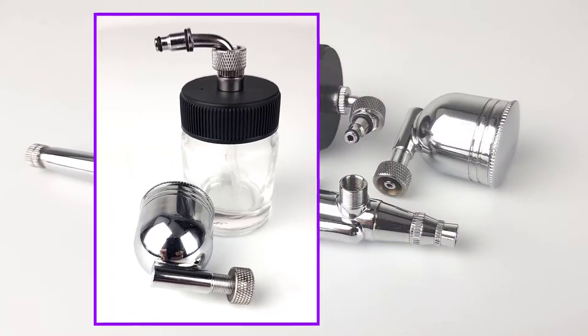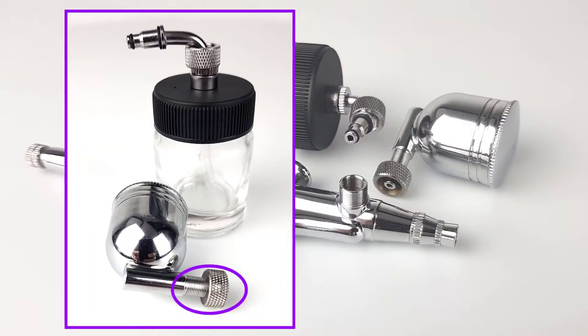The paint jar has a totally different fitting mechanism. The paint feed arm has to initially be screwed into the internal thread of the airbrush.